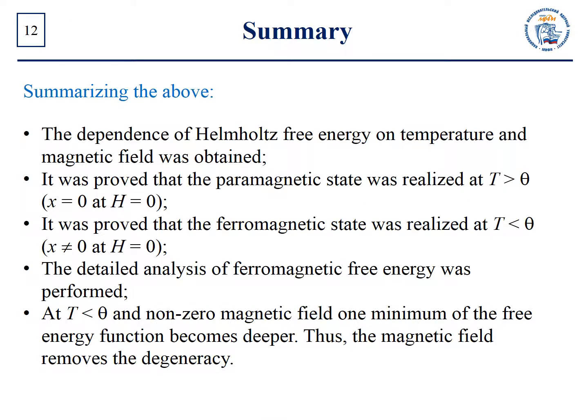In this lesson we obtained an expression for the Helmholtz free energy of a ferromagnet as a function of temperature and magnetic field in the Ising model using the mean-field approximation. We proved that at temperatures below the Curie temperature the ferromagnetic state occurs, and at temperatures above the critical temperature the paramagnetic state is realized. The detailed analysis of the free energy function near the Curie temperature showed that it has two identical minima at zero field below the Curie point — thus the ground state is doubly degenerate. At T less than theta and non-zero magnetic field, one minimum of the free energy function becomes deeper — thus the magnetic field removes the degeneracy.